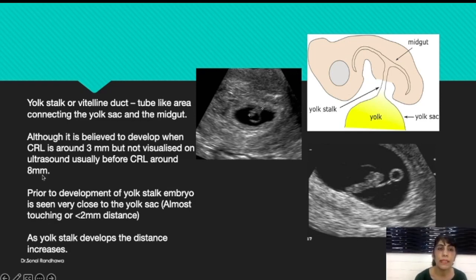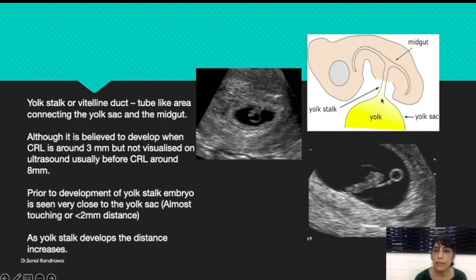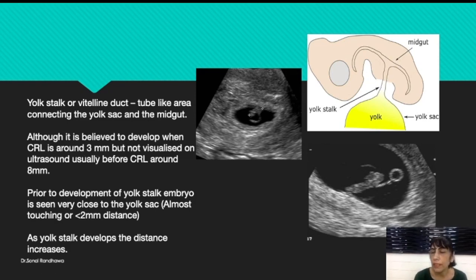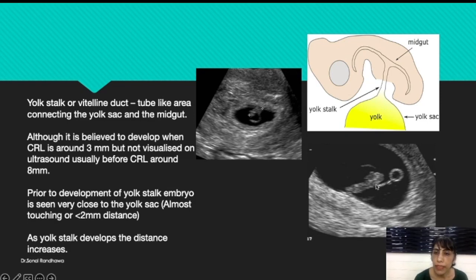The yolk stalk — also more commonly called the vitelline duct — is a tube-like area which connects the yolk sac and the midgut. Supplies go to the fetus from the yolk sac through this yolk stalk. It is believed that the yolk stalk usually develops when the CRL is around 3 mm, which means very early around 5 to 5.5 weeks, but it is not visualized on ultrasound usually before a CRL of around 8 mm. Once the CRL reaches around 8 mm, you can clearly see the yolk stalk attaching to the yolk sac, and you can also see the amnion.